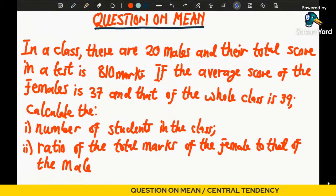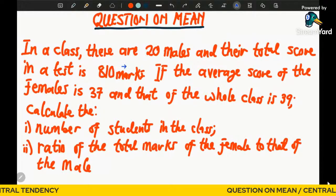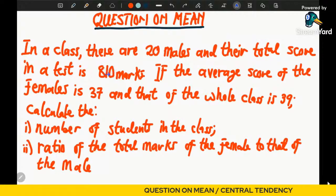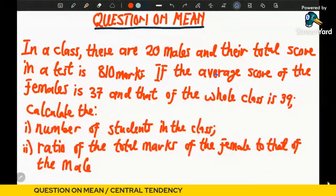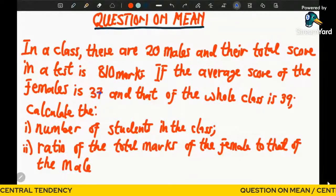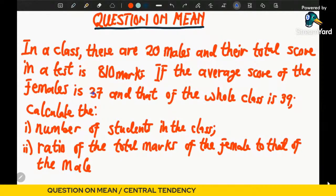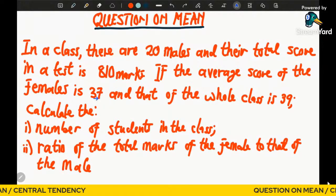We have the total number of males as 20, and their total marks in the test is 810. When it comes to the females, we are told their average, which is the total marks divided by their number. However, the number of females in this particular class was not given in the question, so we are going to represent it by a variable.